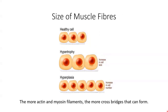We then have the size of the muscle fibres. With training, individual muscle fibres can increase in size, which increases the number of myofilaments. An increase in myofilaments means more actin and more myosin, and therefore more cross bridges can be formed. This increase in muscle fibre size is called hypertrophy. We can also have hyperplasia, where the muscle fibres increase in number, but this does not commonly occur in skeletal muscle.